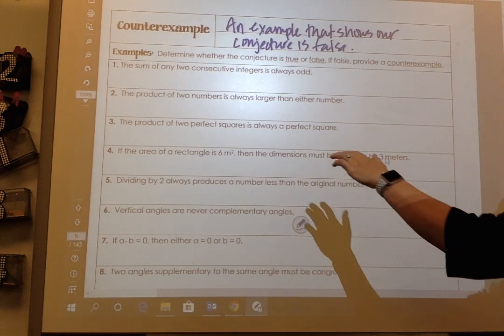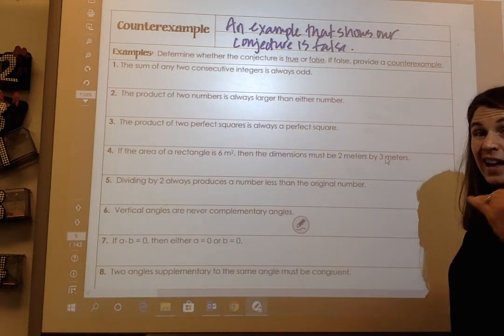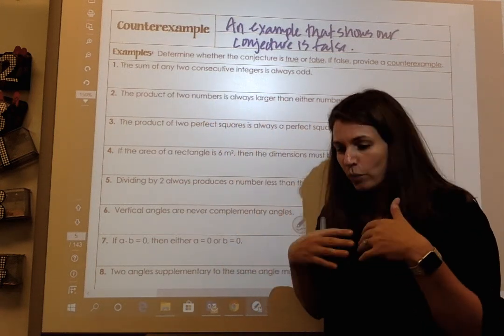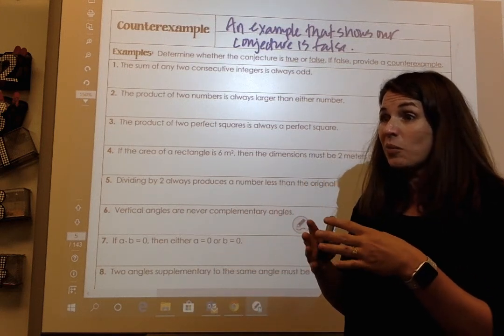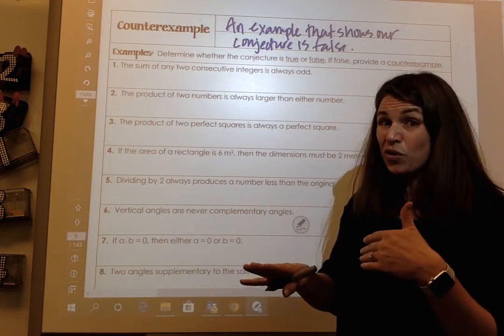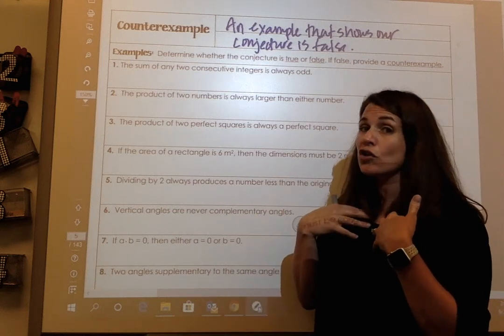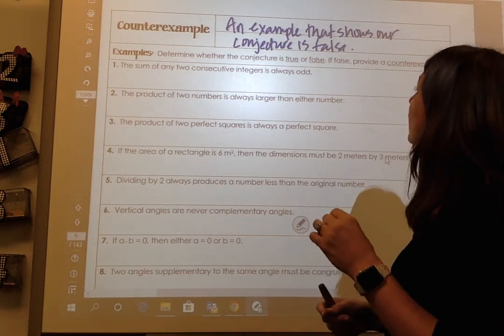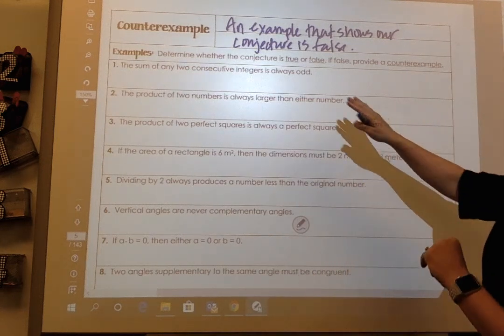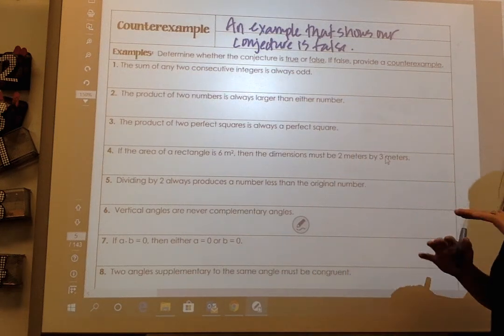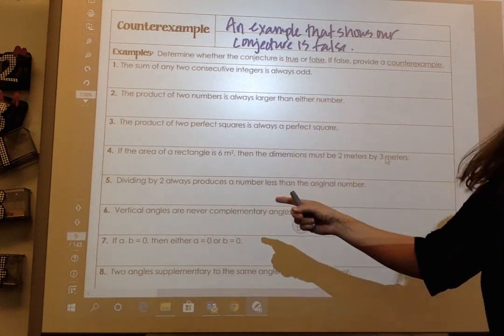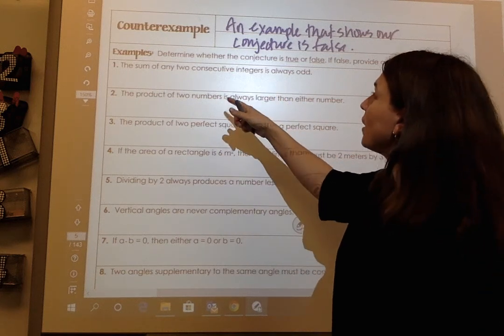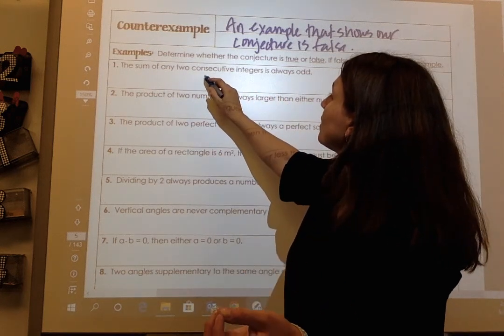So we're going to look at this. So this is a conjecture. And a lot of times in life, we think these things. We see all this information, and we form patterns, maybe based on people. And we draw the wrong conclusions. And our conjectures are not always right about the people that we draw conclusions from. So you need to really think about that. So let's determine whether conjecture is true or false, and if it's false, we're going to provide a counterexample.